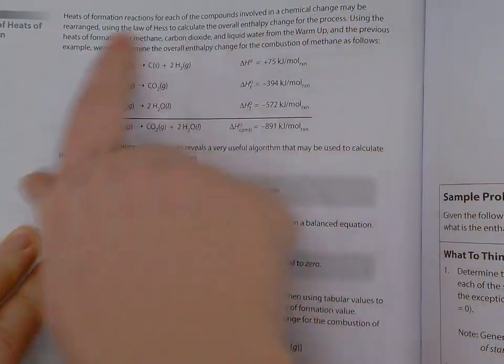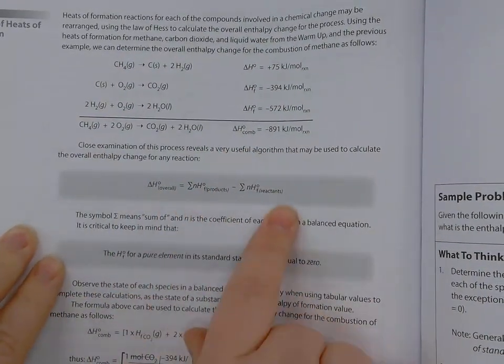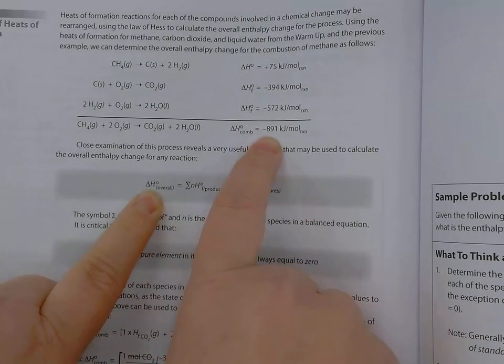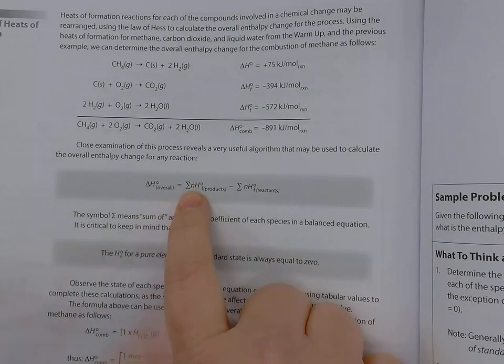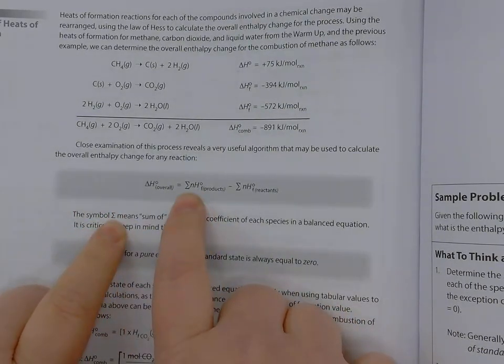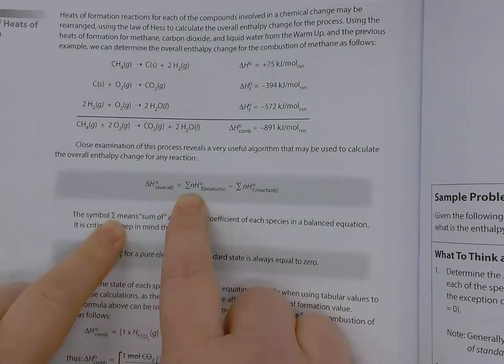So instead of having to do all of this, we can simplify it into an equation. Basically, the overall energy, just like this one, is equal to the sum. So this symbol, which is the Greek letter sigma, represents the sum of.